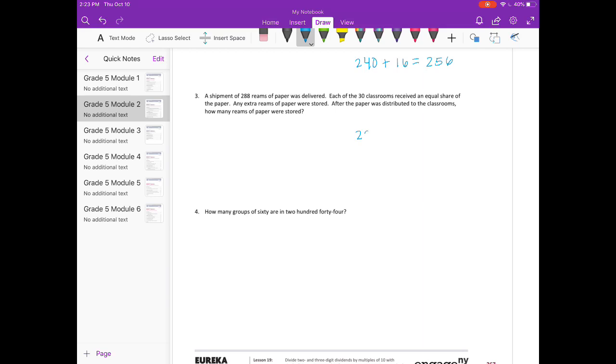So there's 288. We divide it by 30 classrooms. So 30 can't go into 2. It can't go into 28. But 30 could go into 288. Let's see. 3 times 9 is 270. So that's as close as we can get. So 270. We subtract. So 9 remainder 18. So each classroom gets 9 reams.